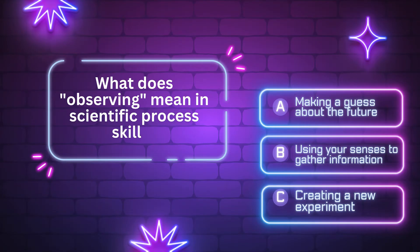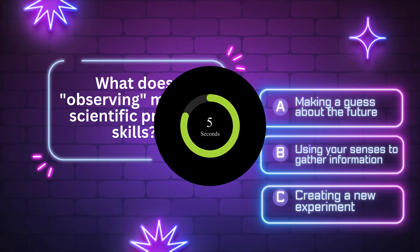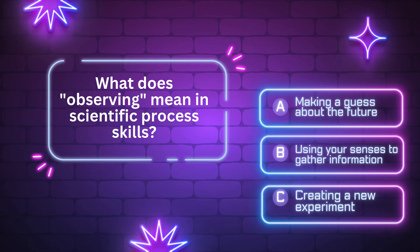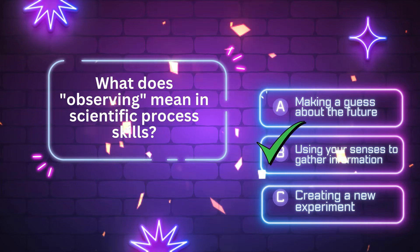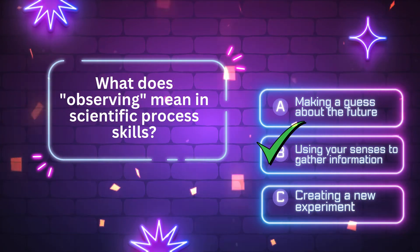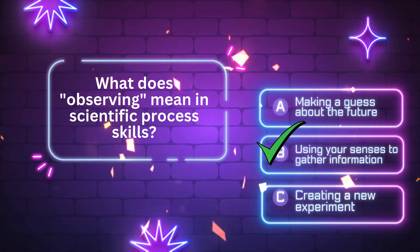What does observing mean in scientific process skills? A. Making a guess about the future. B. Using your senses to gather information. C. Creating a new experiment. The answer is letter B. Using your senses to gather information. Good job. Let's move on to the next question.